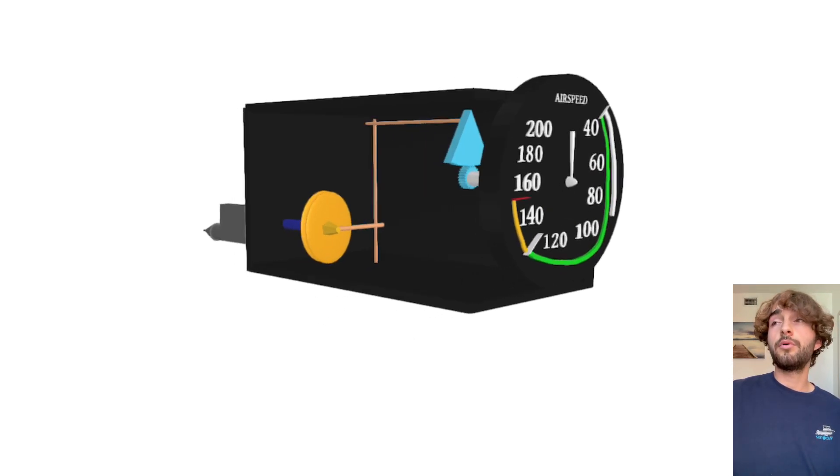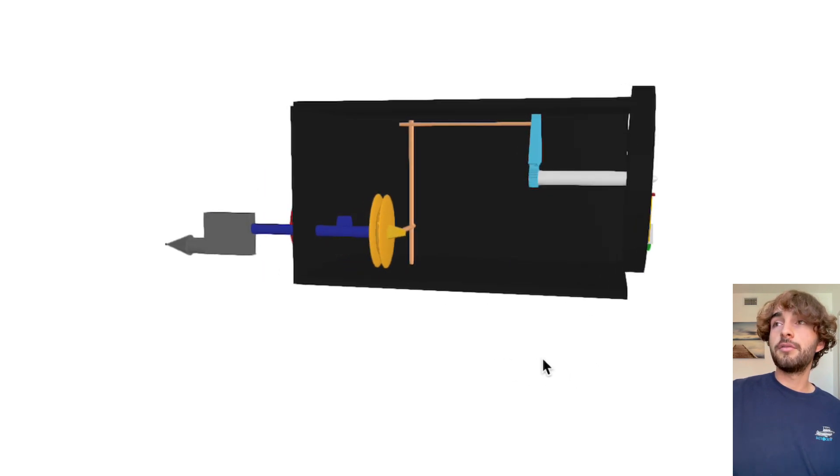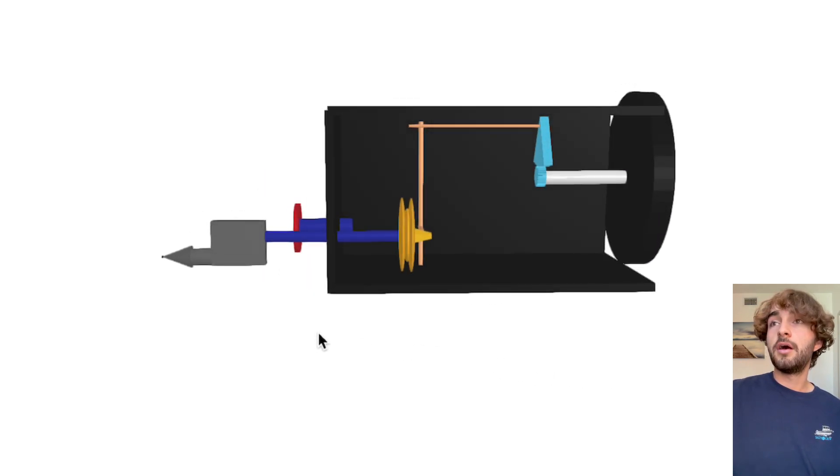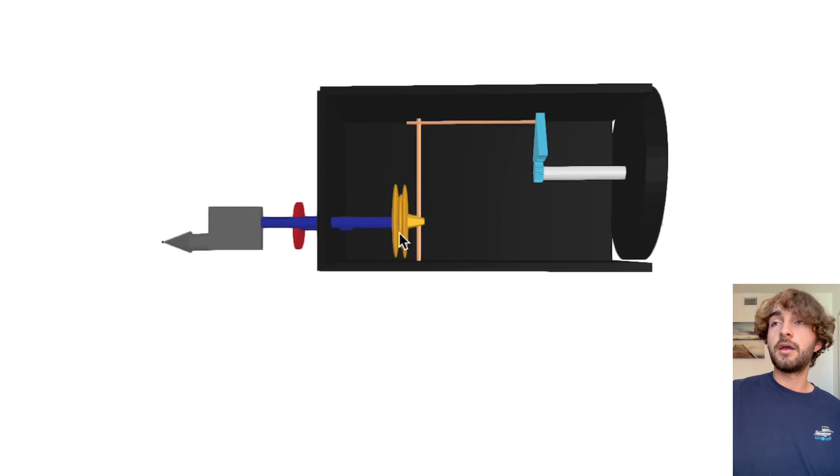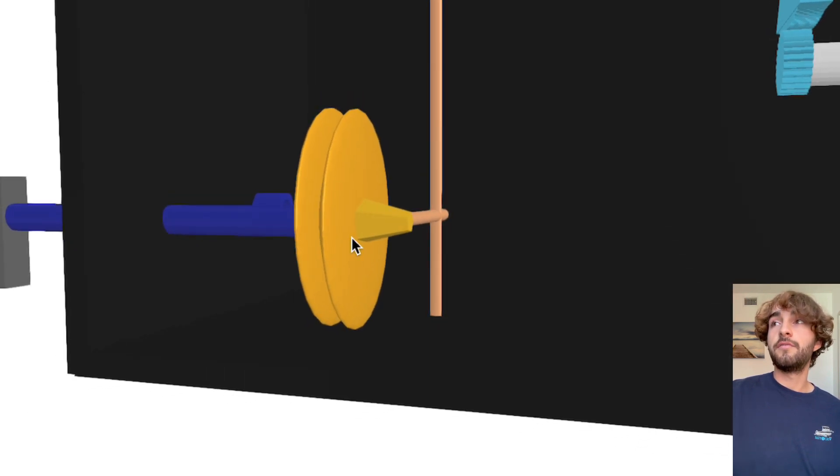So here you can see I worked up a little 3D model of the airspeed indicator. You can see on the inside all the different gears and rods, the diaphragm, which is this guy here, which is going to expand and cause those to move and then in turn eventually move the needle.